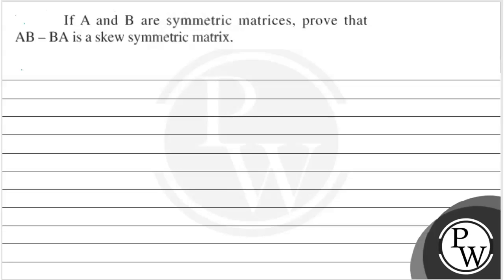Hello, let's see the question. The question says: if A and B are symmetric matrices, then prove that AB minus BA is a skew symmetric matrix.